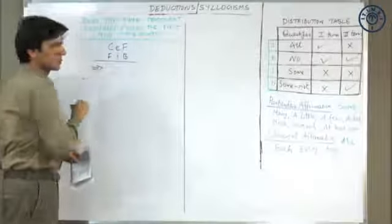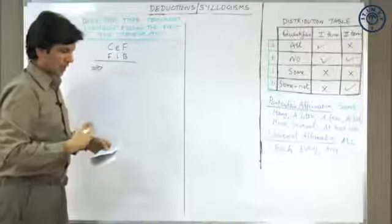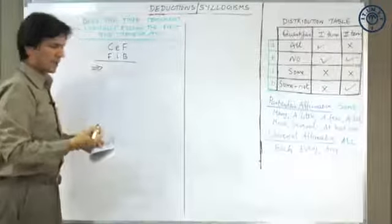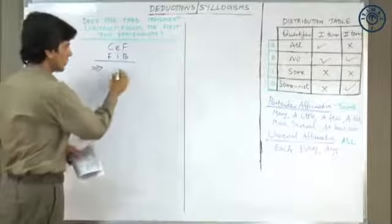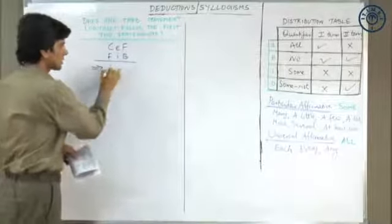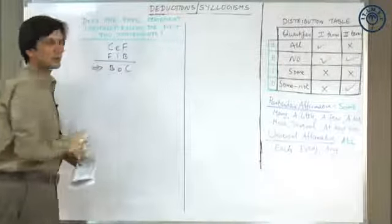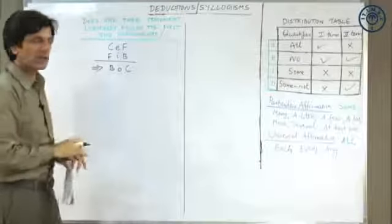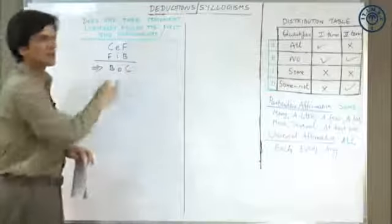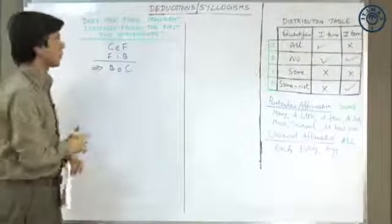Now the question concludes: some brave hearts are not covered. Some not is O. So some brave hearts are not covered is what it infers. Now let's take a look at our distribution table and see if this is logical or not.